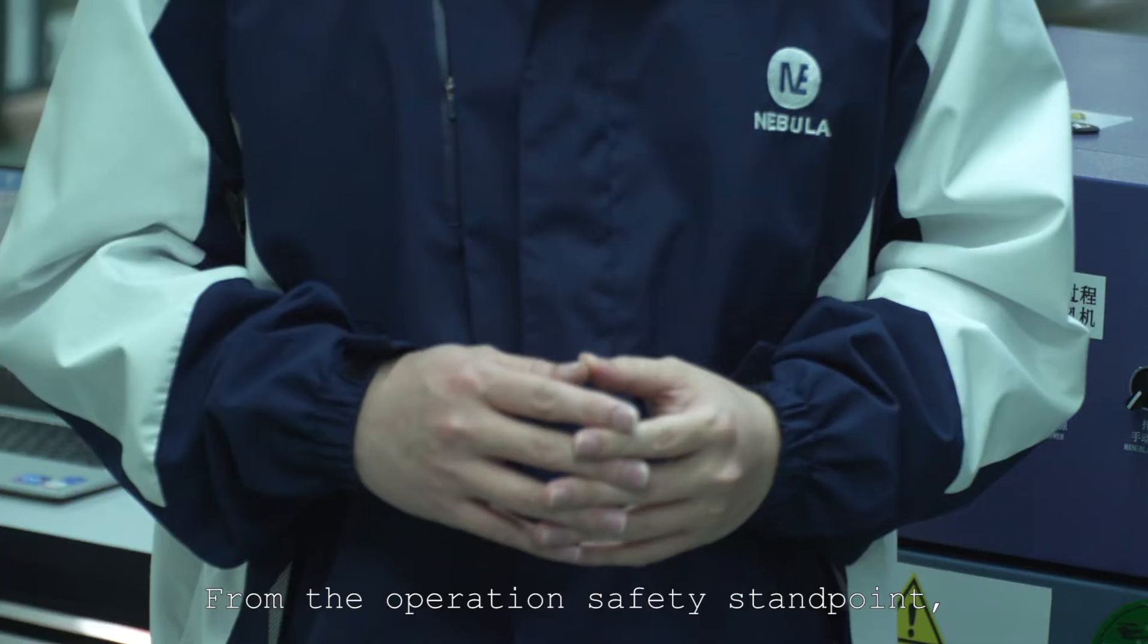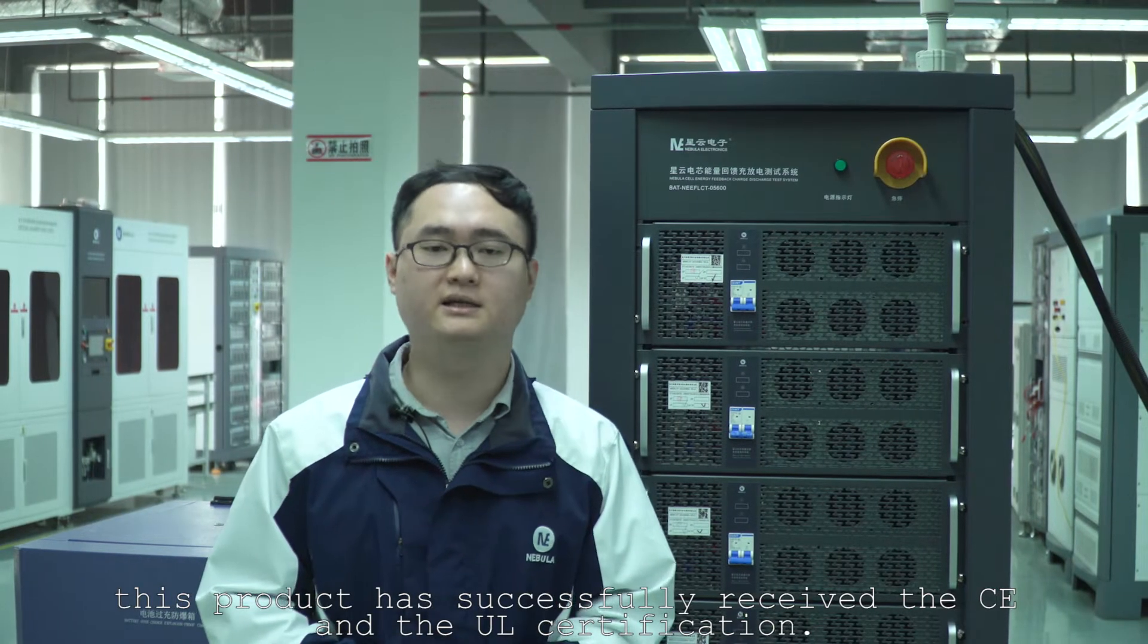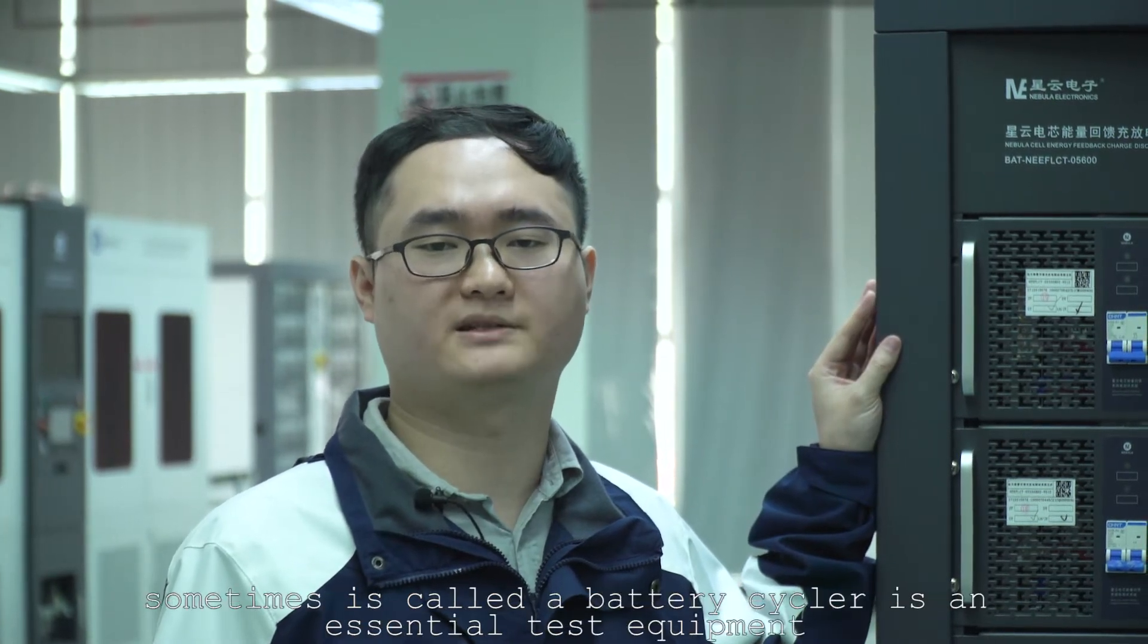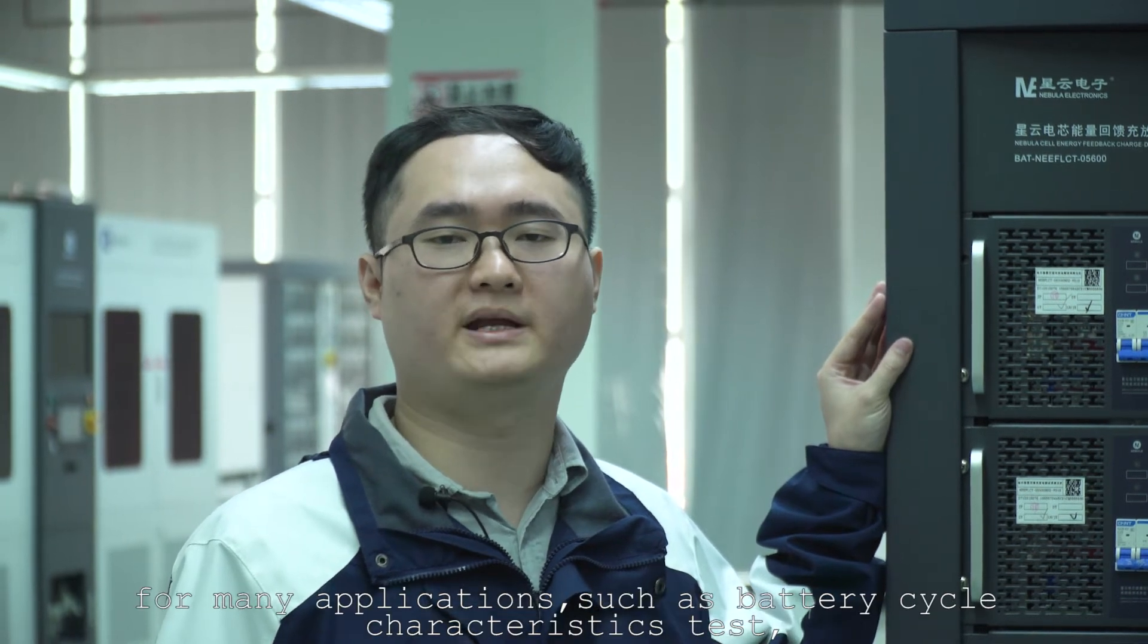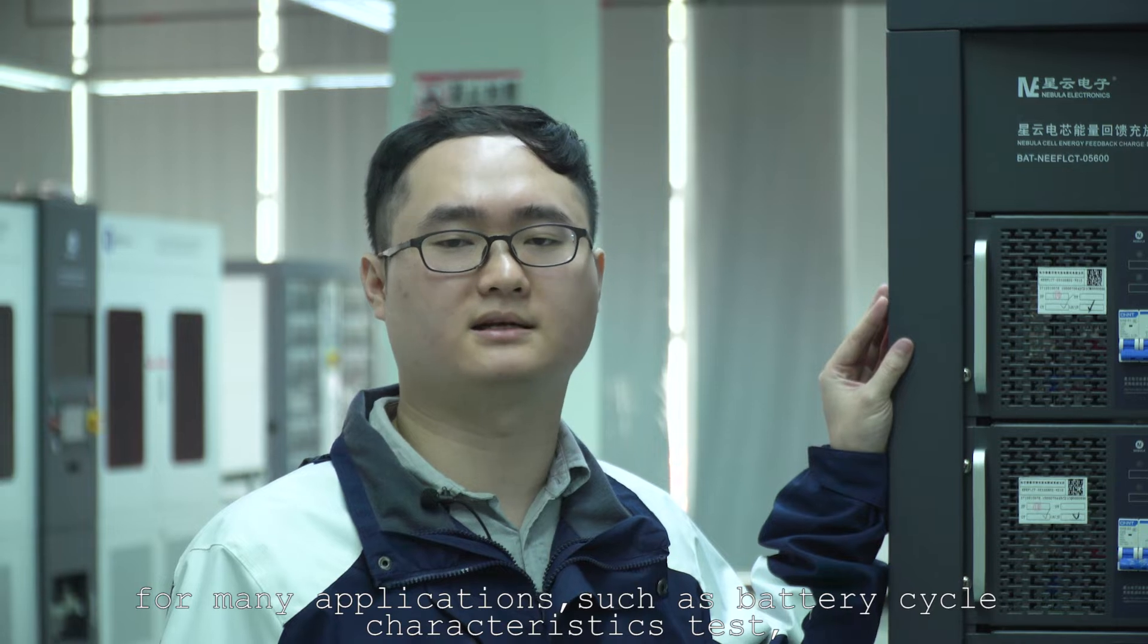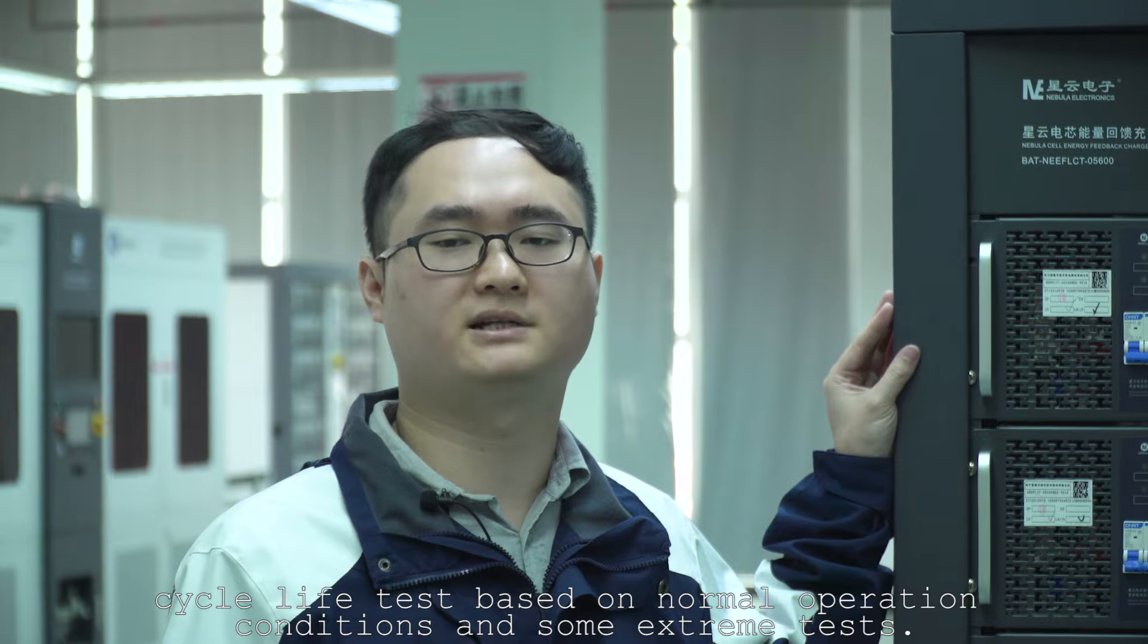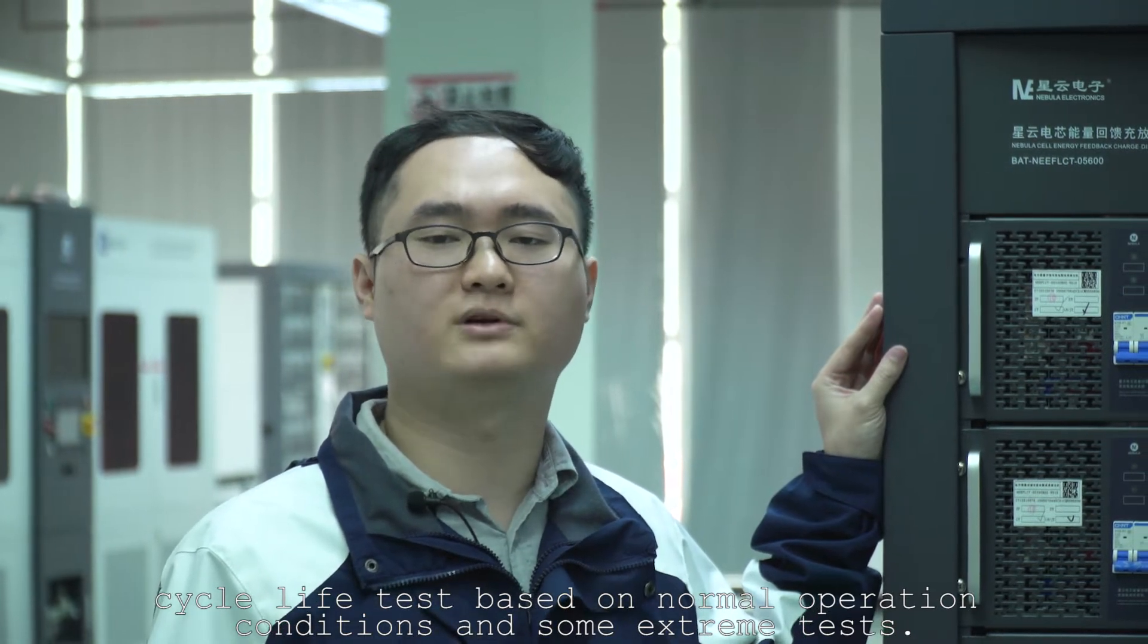From the operation safety standpoint, this product has successfully received CE and UL certification. A battery cell charge and discharge test system, sometimes called a battery cycler, is an essential test equipment for many applications, such as battery cycle characteristic test, cycle capacity fading test, rate charge and discharge test, cycle life test based on normal operation conditions, and some extreme tests, for example the deep discharge test.